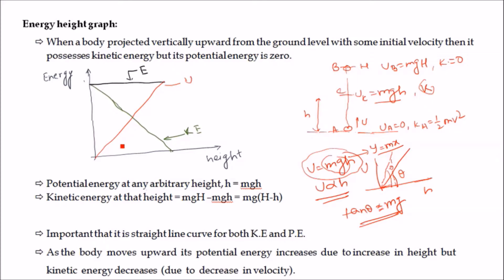This is the curve of potential energy with respect to height h. This line makes an angle theta where theta = tan⁻¹(mg). Now, coming to the curve of kinetic energy — how do we get the kinetic energy curve?